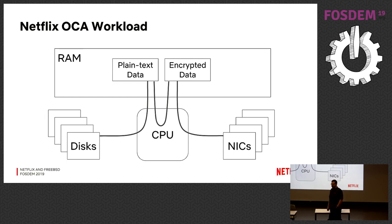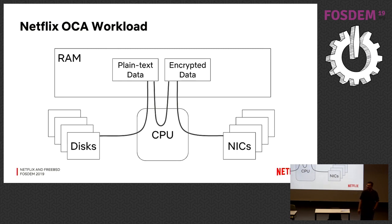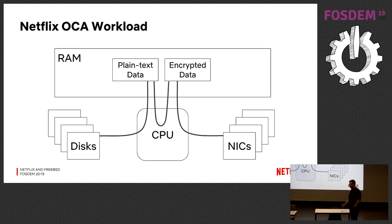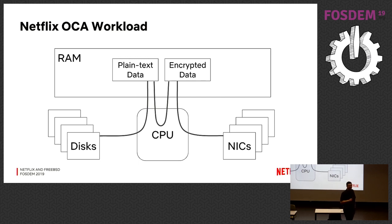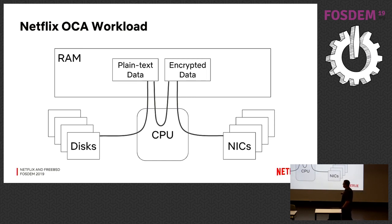Our typical workload on one of our content caches looks like a typical web server. You've got a bunch of storage; you need to get data off the storage into memory. We then encrypt it — we often encrypt it for transmission over a TLS session — and then we send it out over NICs. This is not rocket science in a sense; this is something that many people have done before, and there are probably other people who have done it at the high speeds we are.